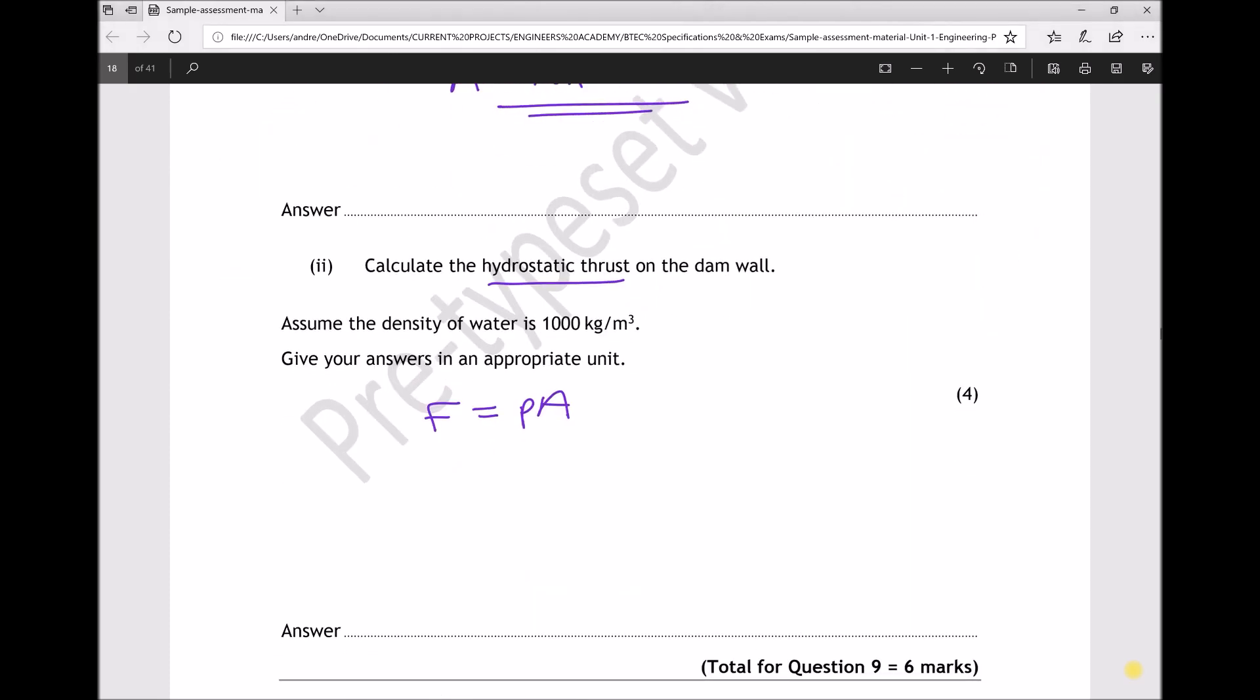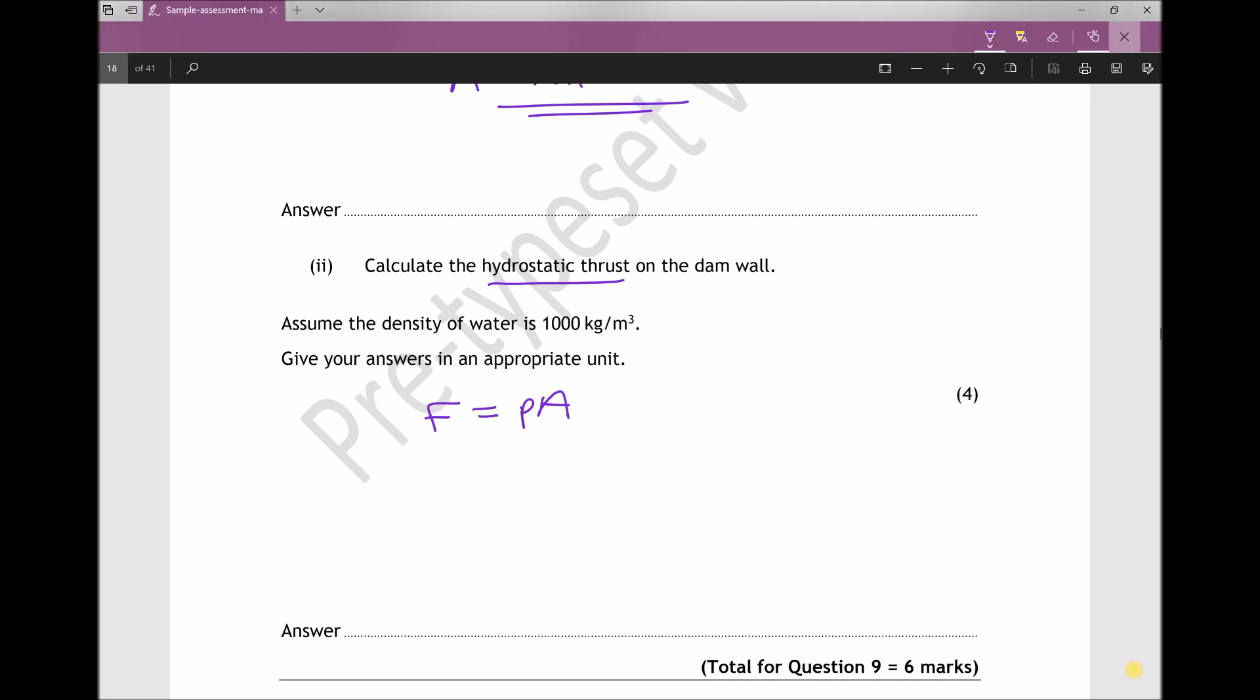Let's go back to our working area. We're given some information. We're given the density of the fluid or the density of the water as 1000 kilograms per meter cubed. So the pressure at a depth of 5 meters is rho g x. Normally we see that formula as rho g h, but we want the pressure at a depth of 5 meters.